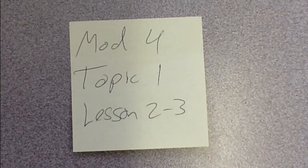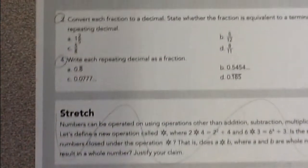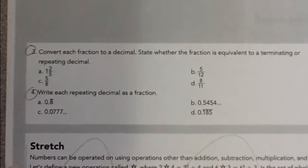We've reached Module 4, Topic 1, Lesson 2 through 3. We'll be doing two pages. Our first page is M430. We're just going to be doing 3 and 4 at the very top.